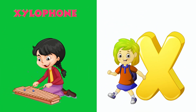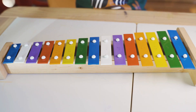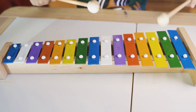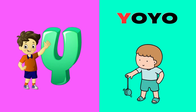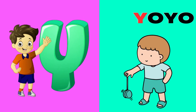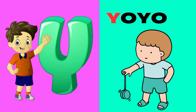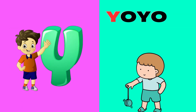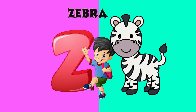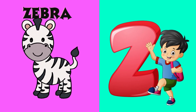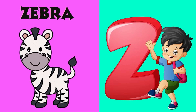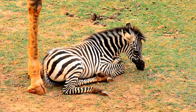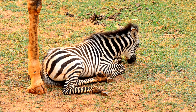X is for Xylophone. X-Xylophone, X-Xylophone. Y is for Yoyo. Y-Yoyo, Y-Yoyo, Y-Yoyo. Z is for Zebra. Z-Zebra, Z-Zebra, Z-Zebra. We'll be right back.